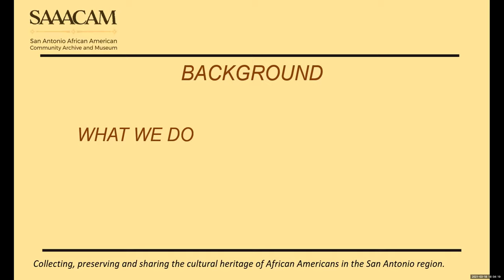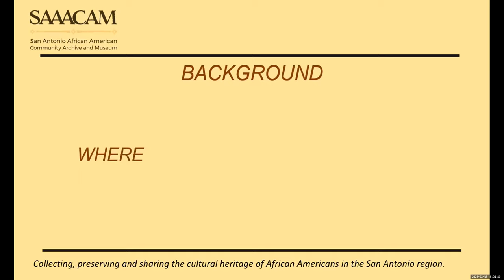What do we do? Our purpose is to collect, share, and preserve the history of African Americans in San Antonio and the surrounding area. We started off primarily as a digital museum, but we are expanding into some physical stuff as well. Our starting footprint was at the Sutton Homestead on North Cherry Street, on San Antonio's east side, not too far from the Tower of the Americas.